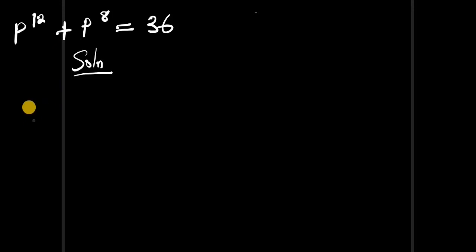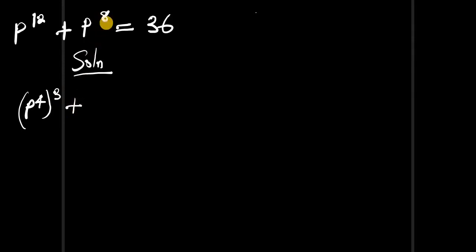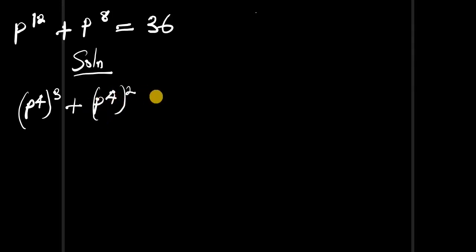We rewrite p^12 as p to the power of 4, all to the power of 3, plus p to the power of 8 we can rewrite as p to the power of 4, all to the power of 2, equals 36.